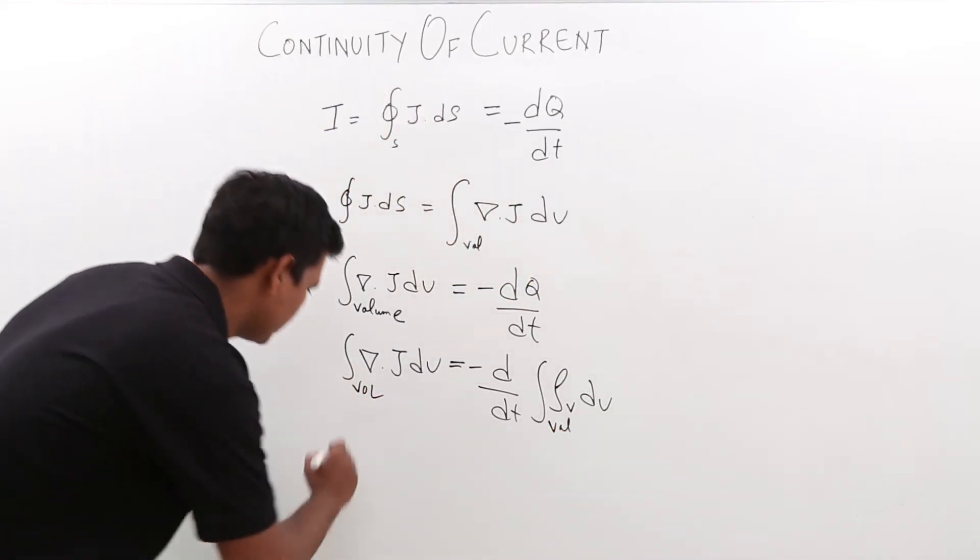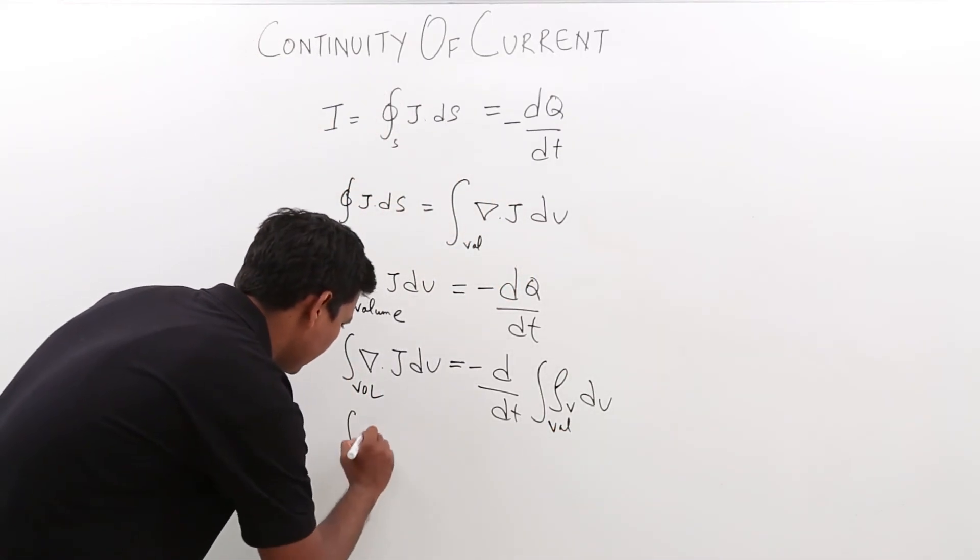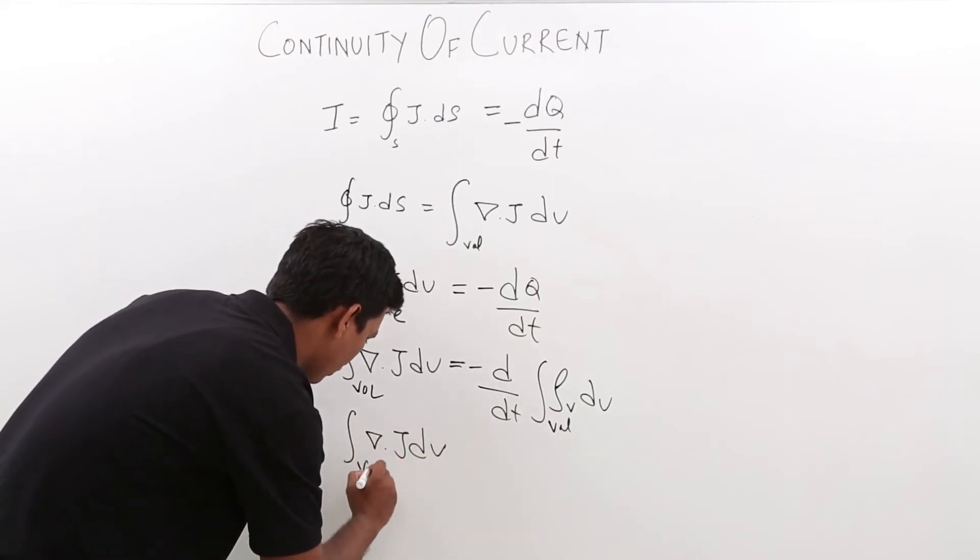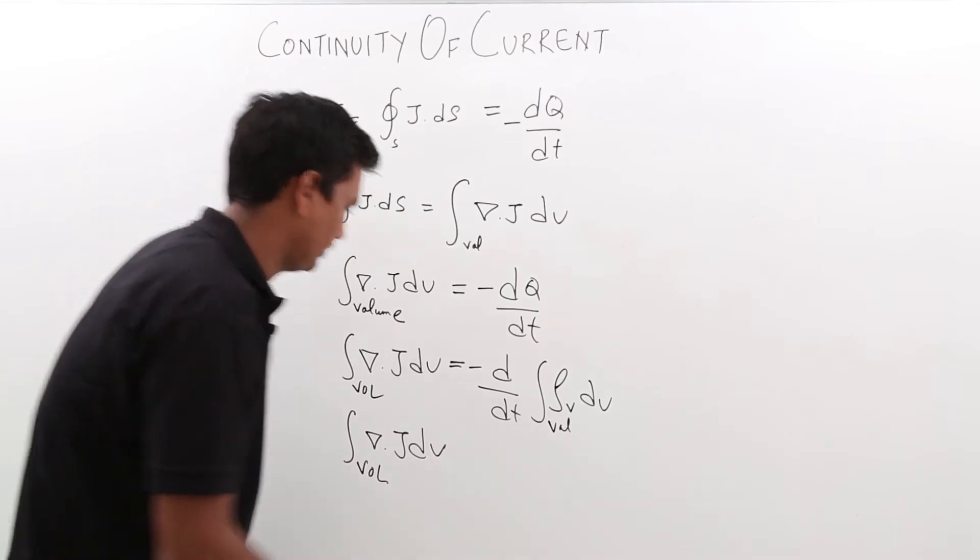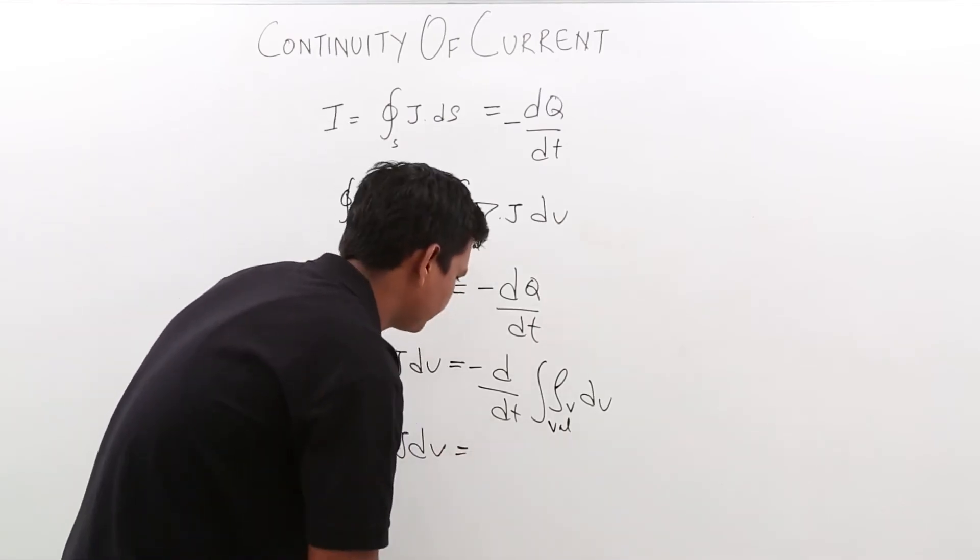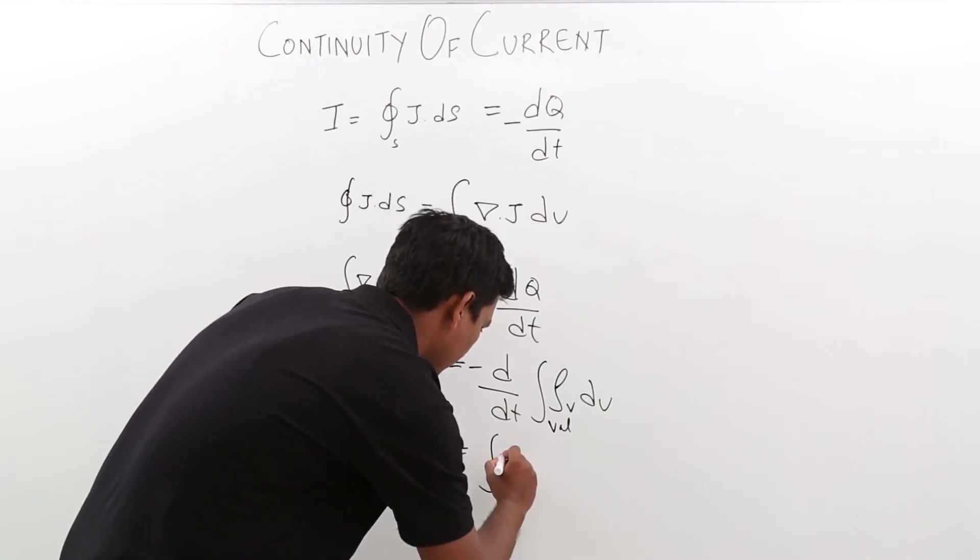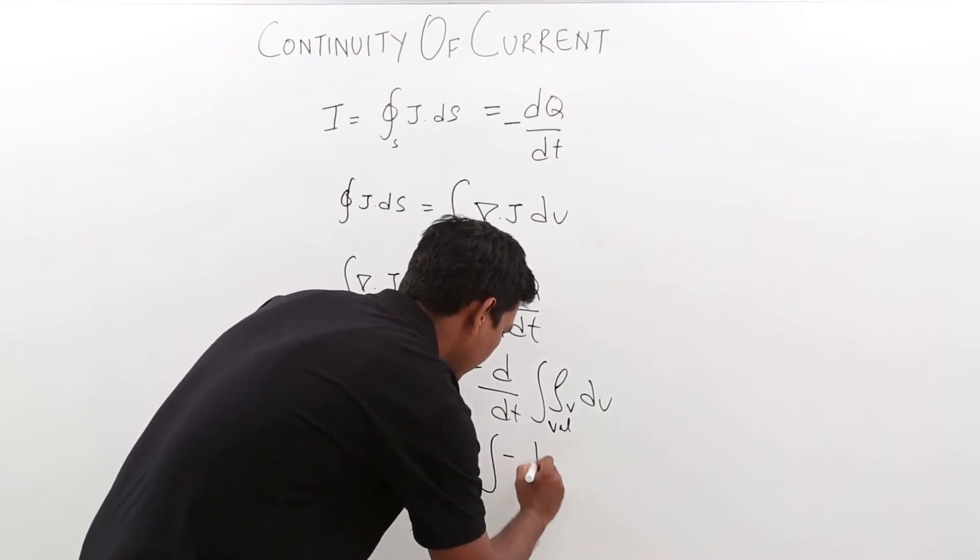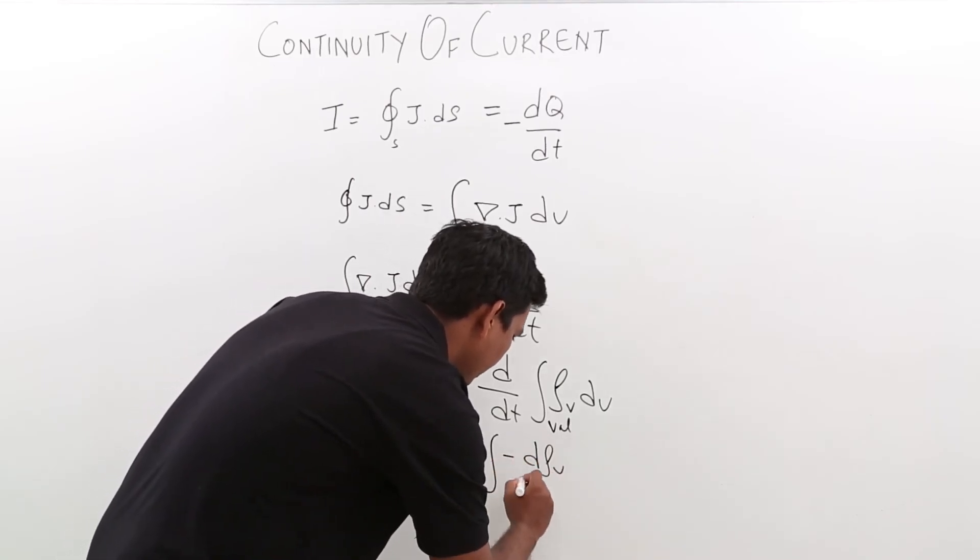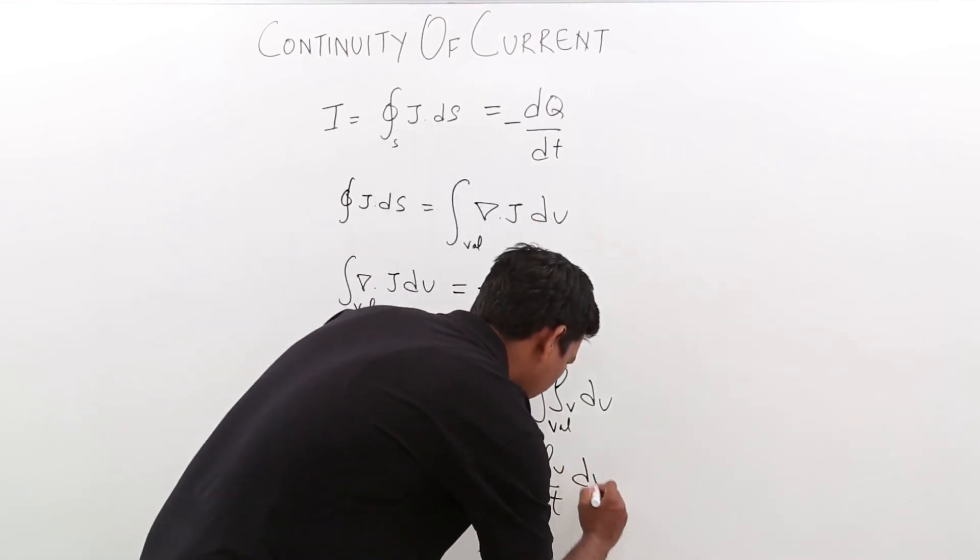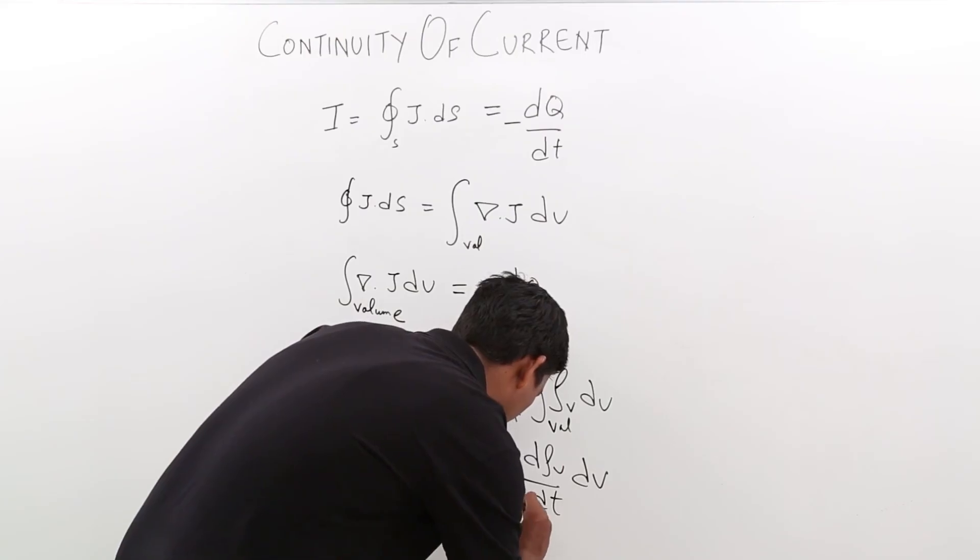We will rearrange this equation. So it would be the volume integral of del dot j dv is equal to minus d rho v by dt dv over the volume.